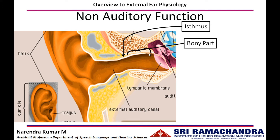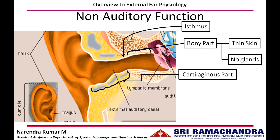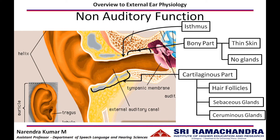The skin that covers the bony part of the ear canal is very thin, as it is devoid of any glands beneath it. However, the skin layer covering the cartilaginous portion is thicker, with the presence of hair follicles, sebaceous glands, and ceruminous glands. The sebaceous glands secrete oil and together with the ceruminous glands keep the cartilaginous part of the ear canal moist, collecting dust particles and microbes. The sebaceous glands neutralize microbes or pathogens, and the ceruminous glands create earwax lodged in the cartilaginous part.